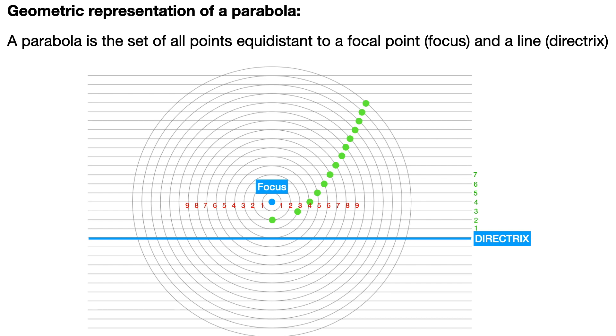If you continue the pattern you have a curve. Because the circles appear on the right and the left, you can continue this pattern. All these points are equidistant from the focus and the directrix and a parabola is formed. You can see that the parabola is the set of all points equidistant from a focal point and a line.